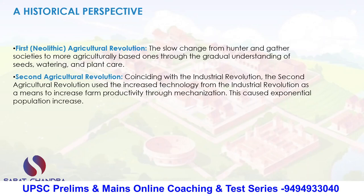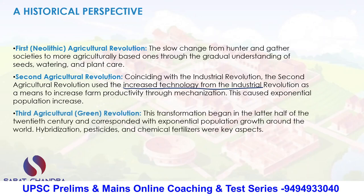The second agriculture revolution coincided with the industrial revolution, wherein we talked about increasing technology in agriculture — we used hybrid seeds and had the green revolution. The third agriculture revolution is basically talking about hybrid varieties, pesticides, and fertilizers. India is basically now in the third agriculture revolution.